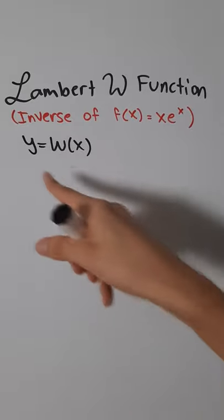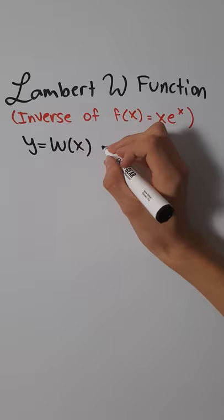If we let y equal w of x, the Lambert W function, this tells us that e to the y is simply equal to e to the w of x.